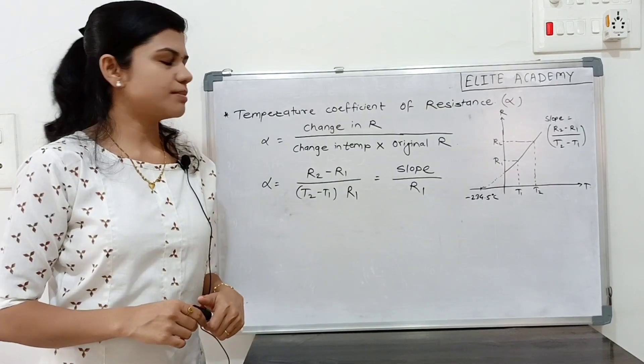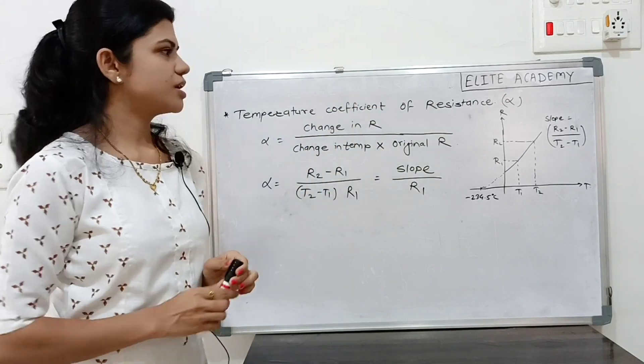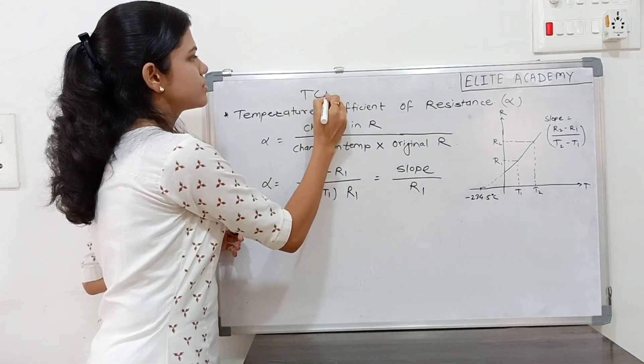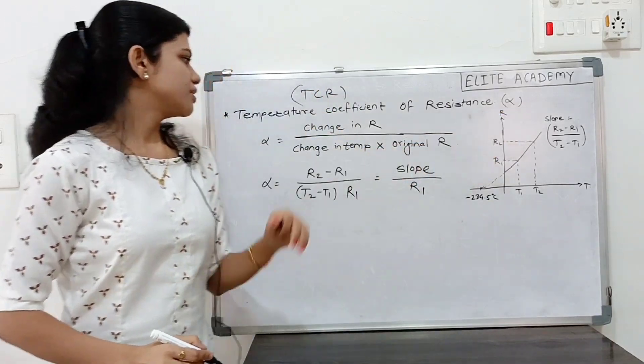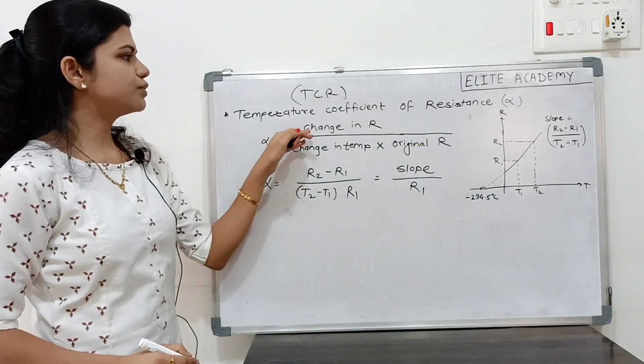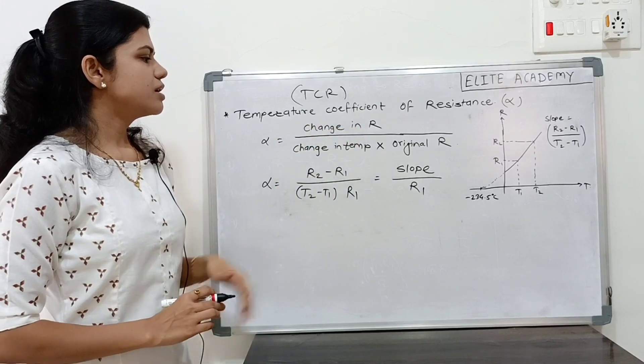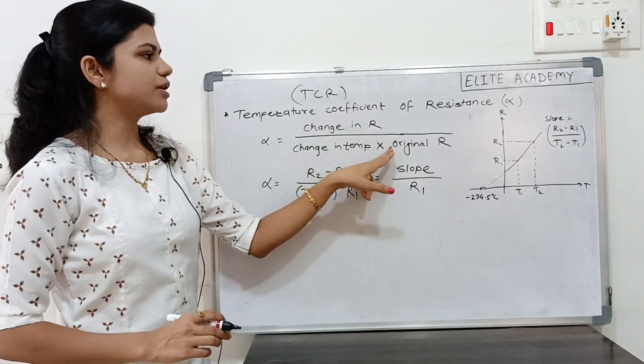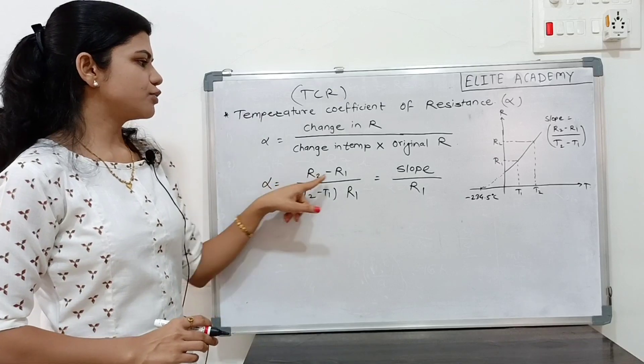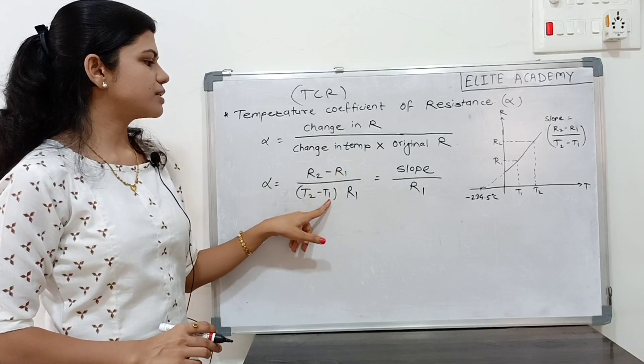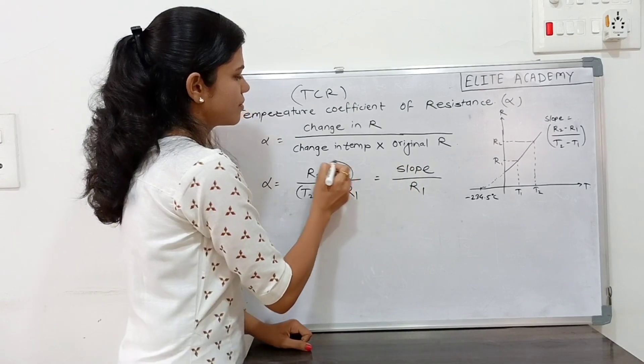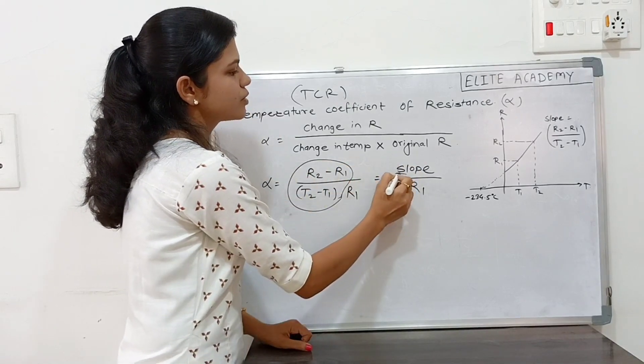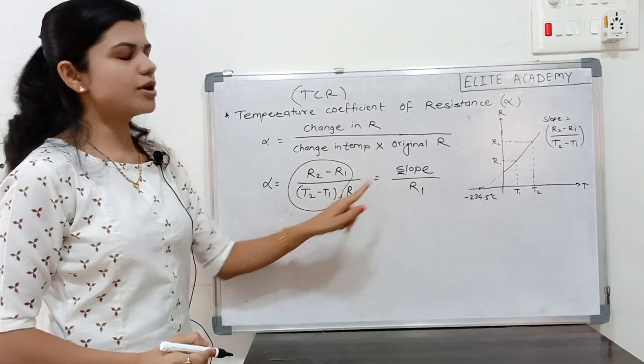Next concept, temperature coefficient of resistance. It is also called as TCR and it is denoted by alpha. The formula for TCR is equal to change in resistance R to the change in temperature into original R. R2 minus R1 upon T2 minus T1 into R1. Where this term is nothing but the slope and therefore slope upon R1.